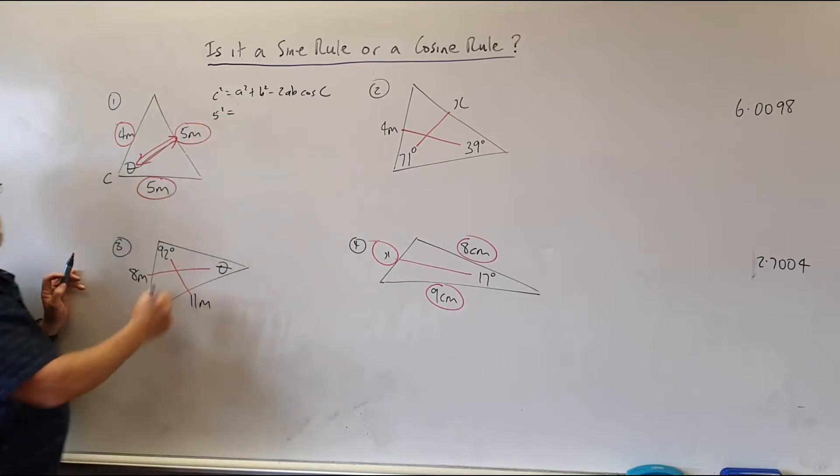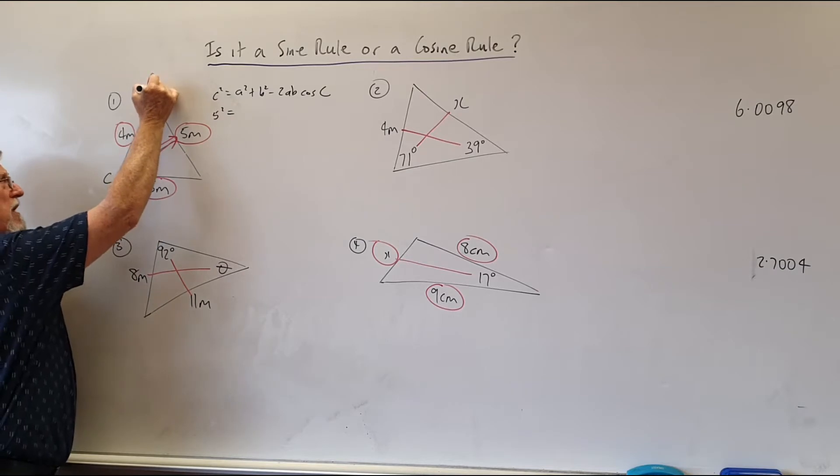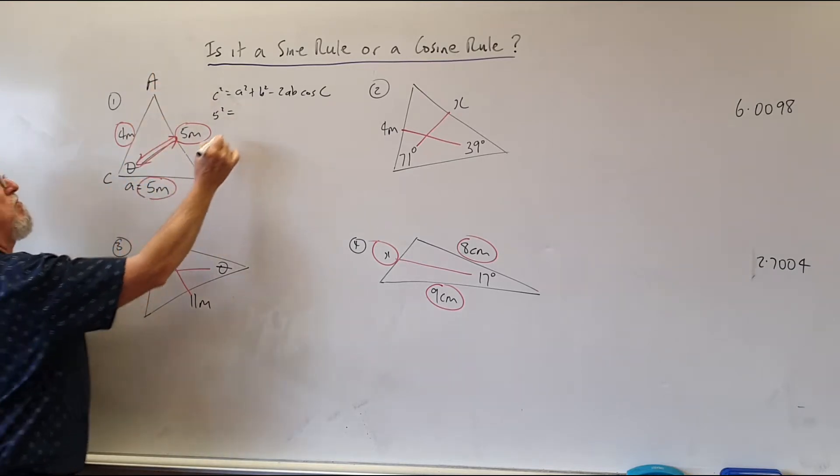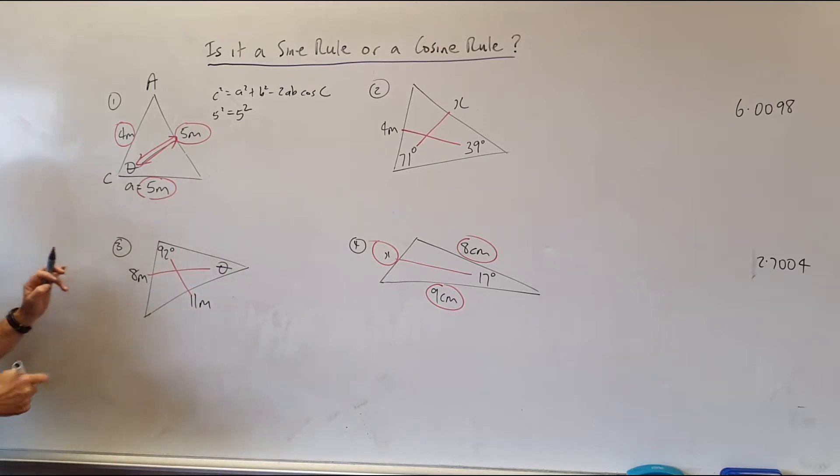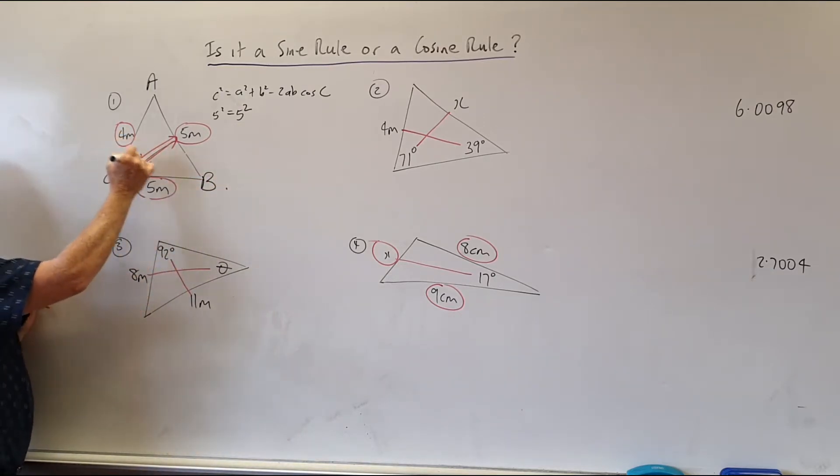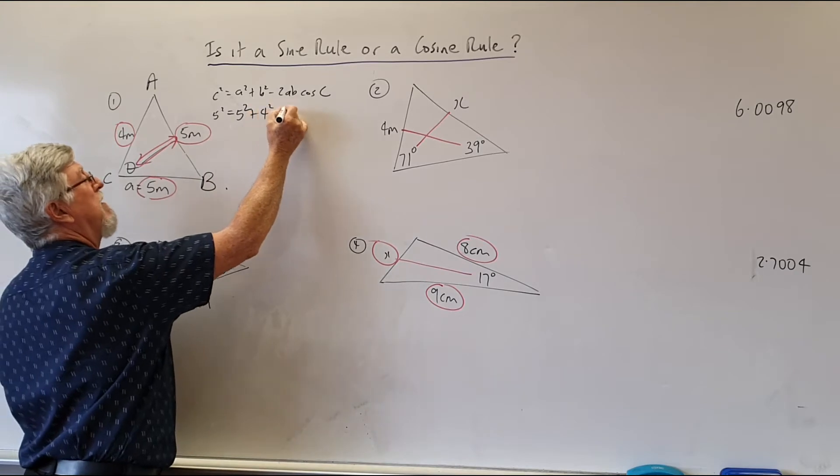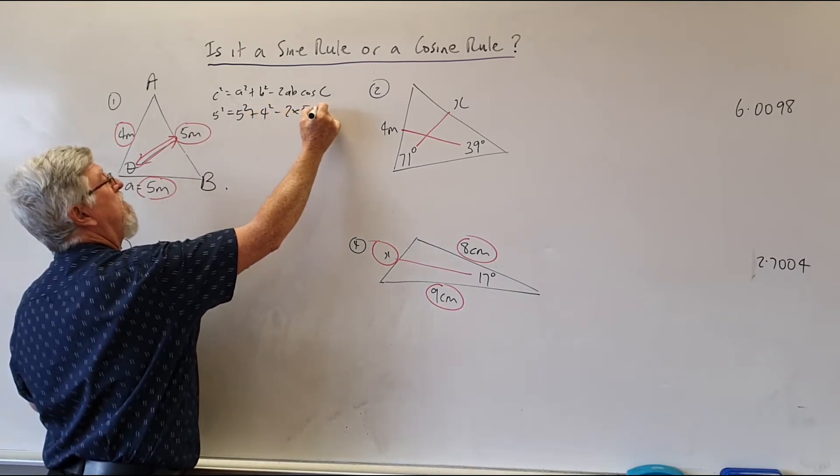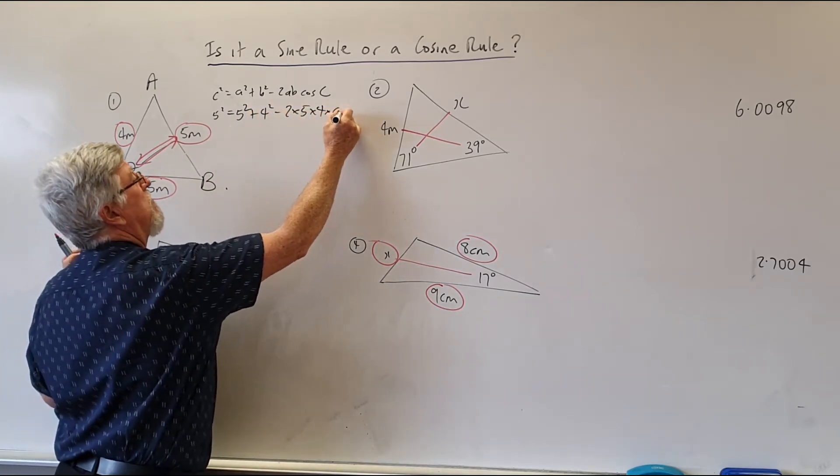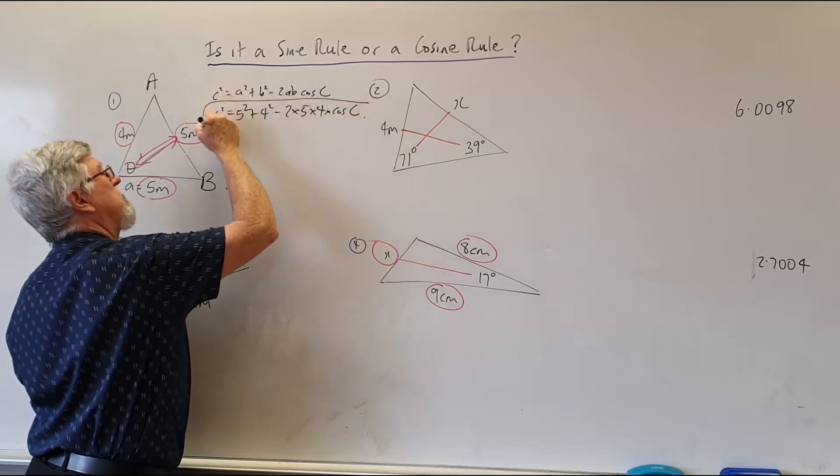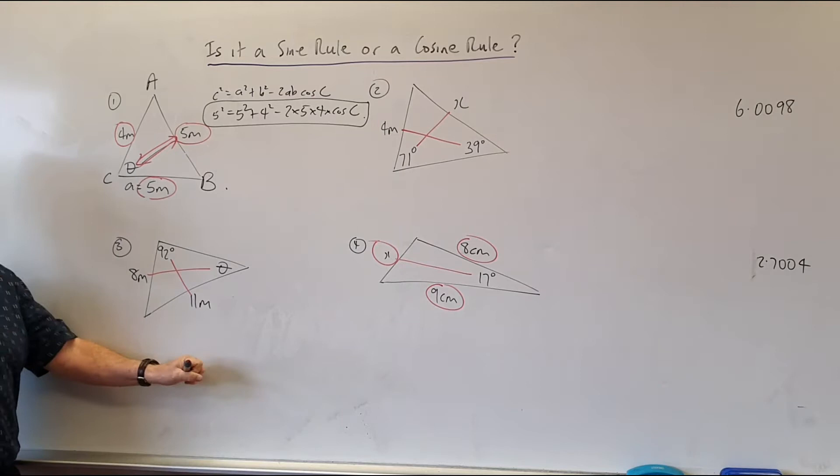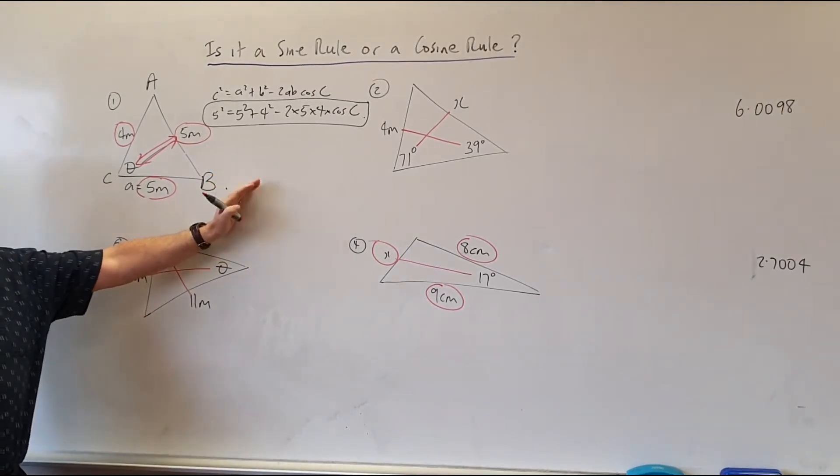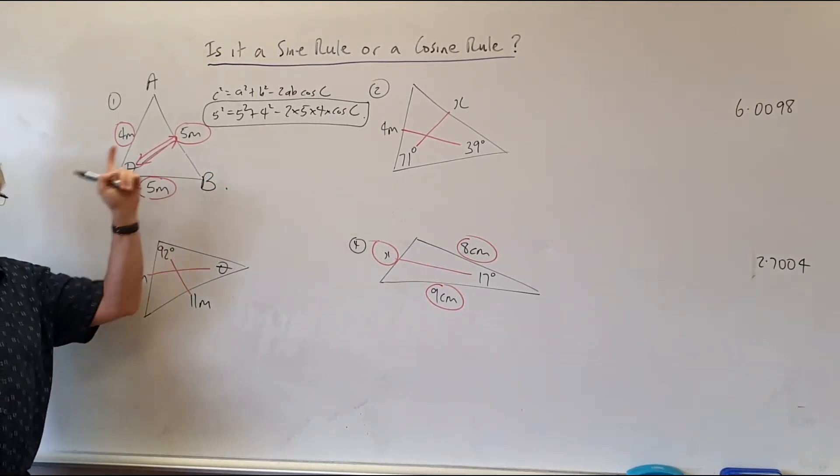Let's put the numbers in. So opposite capital C is little c. So that's a five. So there's a five squared. So this one here, I could call A. If I called that A, this would be little a, so I could write five squared there. Then I can go ahead to the next one. If I call that capital B, I can go across there and I can go, that's the four squared minus 2 by 5 by 4 by the cosine of C. Now, the actual doing of that, you can put into your class pad calculator or your scientific calculator. That's on previous videos. That's not what I'm doing here. I'm just saying, do you recognize which one it is?